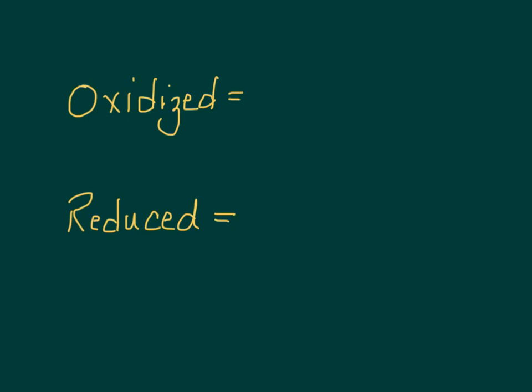Now that we know how to find oxidation numbers, we're going to use them to determine what's being oxidized and what's being reduced. Remember, if something is oxidized, we know that means it has lost electrons. We're also going to call it the reducing agent.